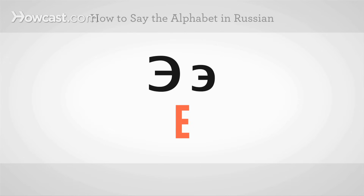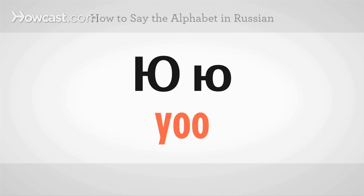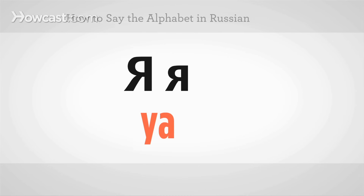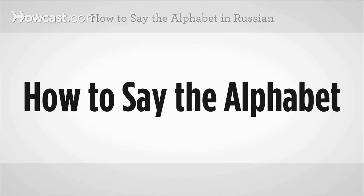Э. Ю. Я. That's how you say the alphabet in Russian.